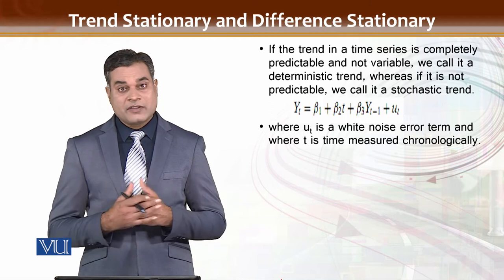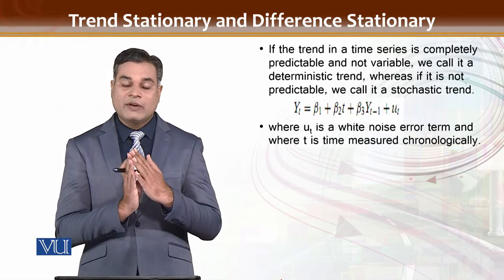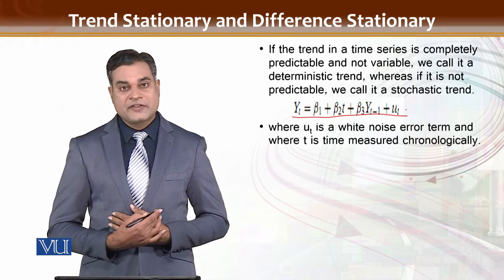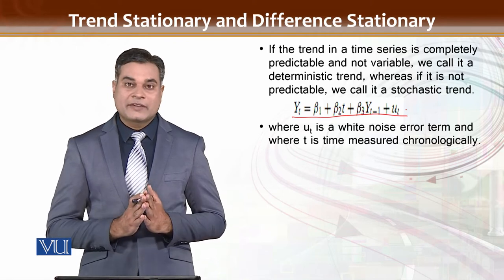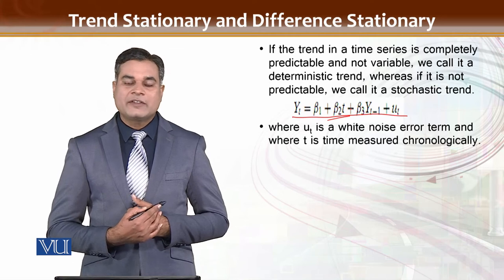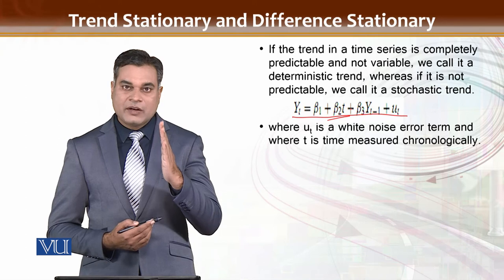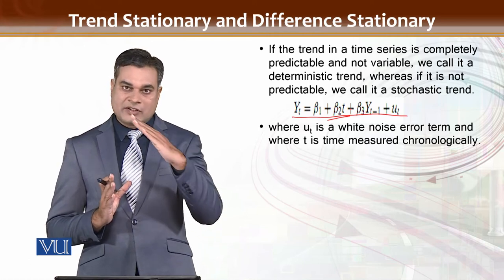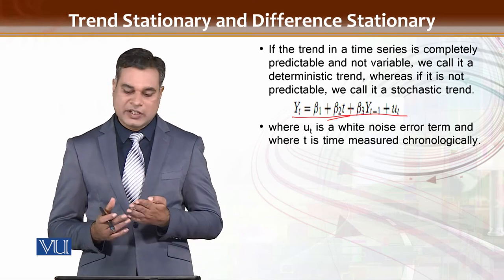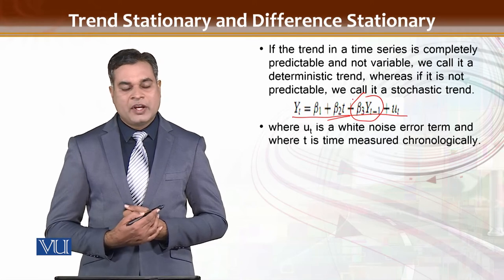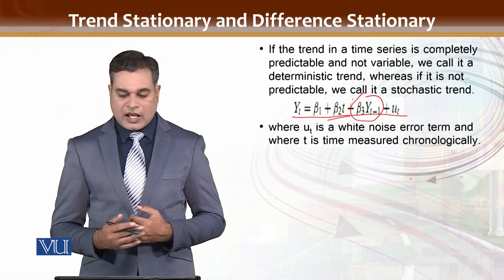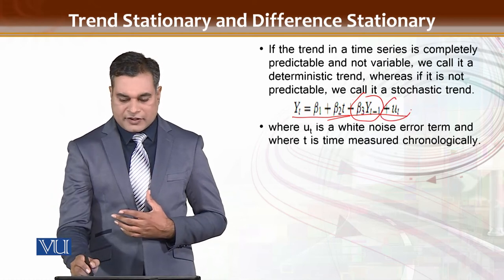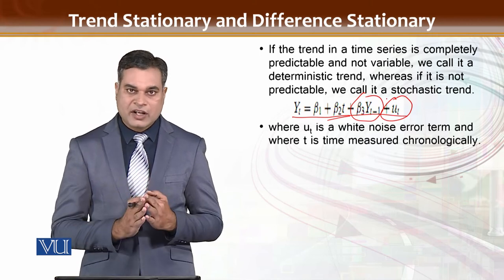If you take the difference of such a series, it becomes stationary. The formula is: yt is equal to β1 — which is the constant, also called drift — plus β2·t, where t shows the trend, indicating whether the value changes with the passage of time. Then β3 relates yt to yt minus 1 — this is the random walk component. This is a comprehensive model that includes the error term, the difference term, the trend term, and the constant.